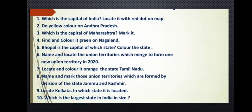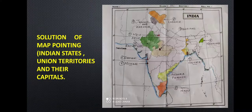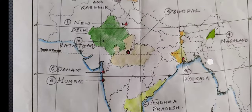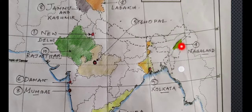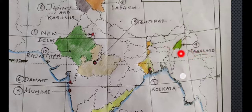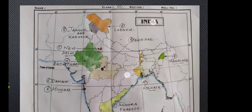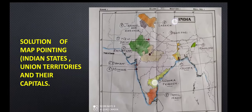Find and color it green on Nagaland. Nagaland is also a state of the Northeastern part. This is the Northeastern part of our country, and here I have marked it. This is Nagaland. I have given the number four and written it. It is colored in light green.